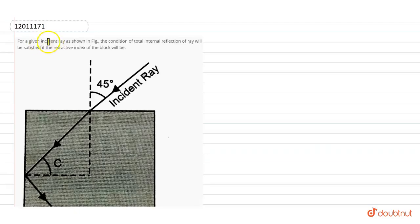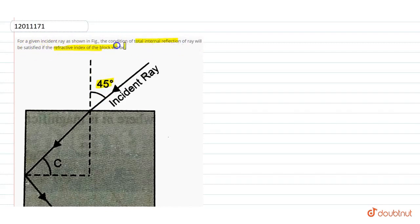For a given incident ray, as shown in the figure, when the incident angle is 45 degrees, the condition for total internal reflection of the ray will be satisfied if the refractive index of the block will be?